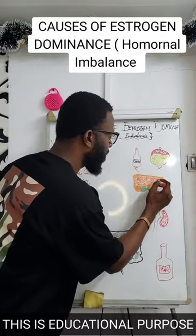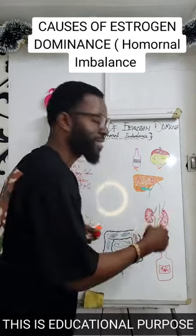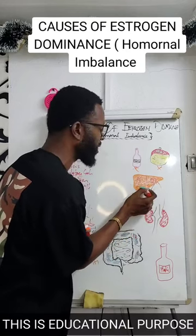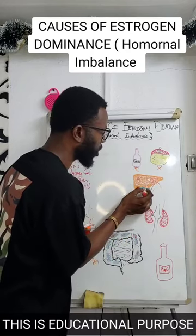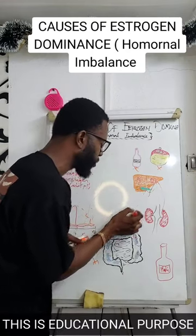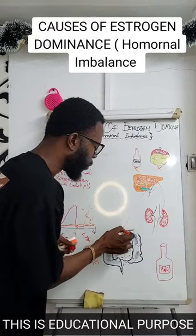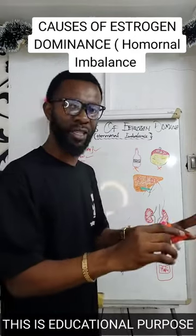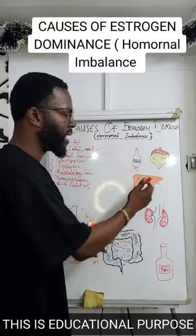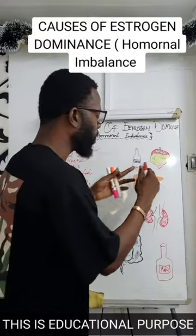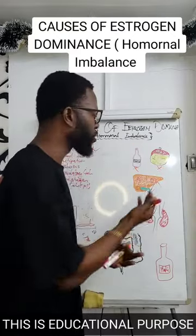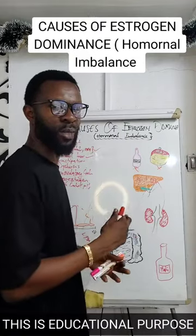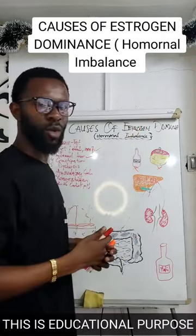When the liver breaks down estrogen, it expels it to the kidney and it comes out as urine. Sometimes the breakdown products are stored in the gallbladder, which then expels them to the intestines, and we excrete them as feces. So when your liver is inflamed, it can slow down the breakdown of estrogen, and that can cause estrogen dominance.